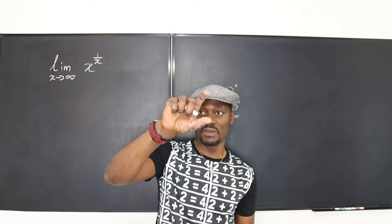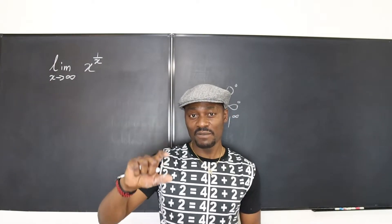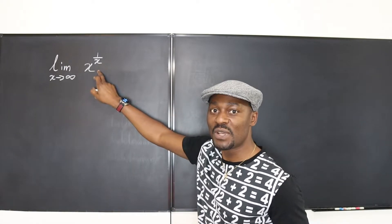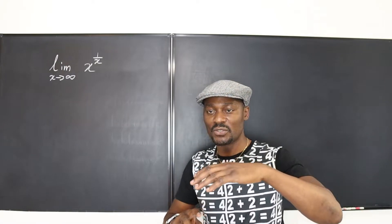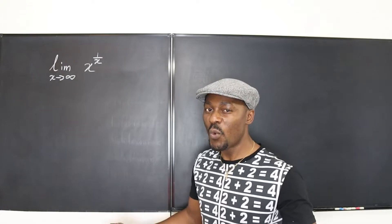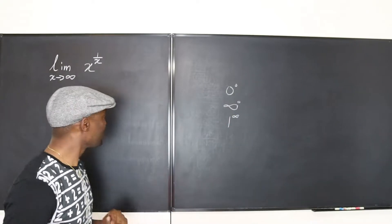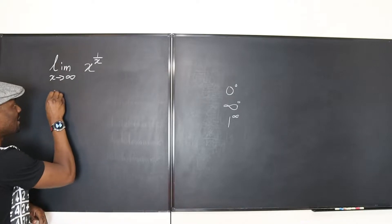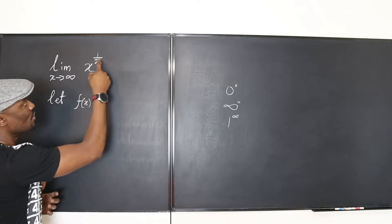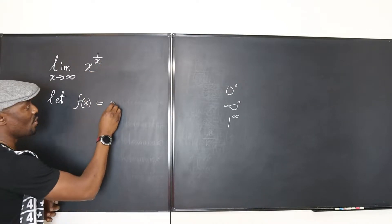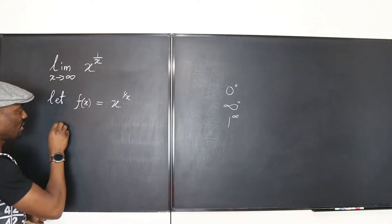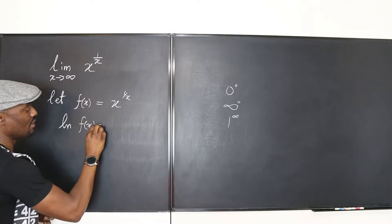You also want to use L'Hôpital's rule when you have a fraction — you must have a rational expression with a function on top and a function on the bottom. You cannot use L'Hôpital's rule here yet because it's not a rational expression, so we want to make a rational expression out of this. The best strategy: let f(x) equal x to the 1 over x.